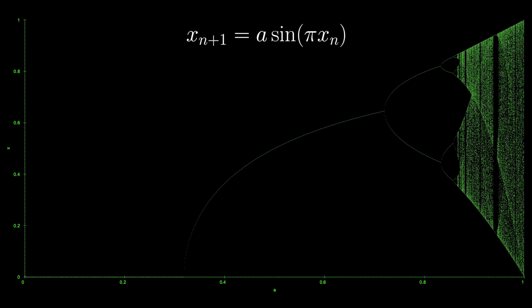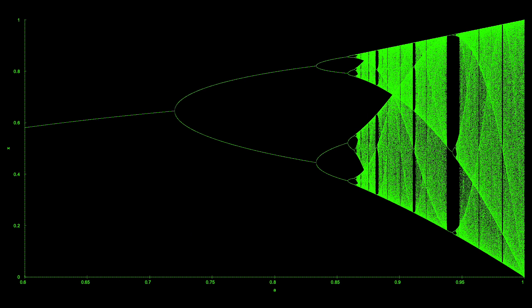Let's look at another map: the sine map. Although it is generated from a very different function, we see that its bifurcation diagram is quite similar. Its period doubling is still proportional to the Feigenbaum constant, and we see similar areas of stability after the onset of chaos. This universality is one of those surprising but delightful results in mathematics.